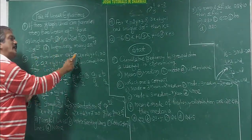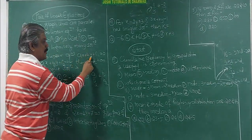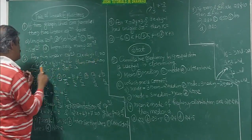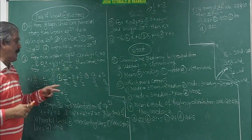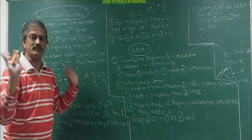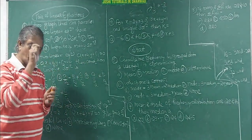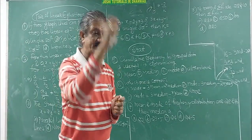For two linear equations A1x plus B1y plus C1 equal to 0 and like this, then condition for unique solution: A1 by A2 is not equal to B1 by B2. That is the condition. So you must know. Again I am telling specific.